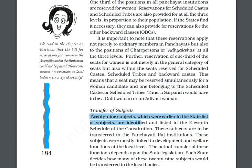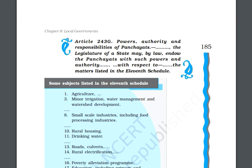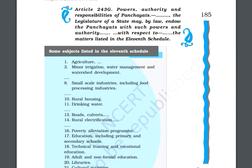This variation occurs from state to state — each state decides how many subjects to transfer to local bodies through its own law-making process. Article 243G deals with the powers, authority, and responsibilities of panchayats. The legislature of a state, by law, endows the panchayats with such powers and authority with respect to the matters listed in the 11th schedule.